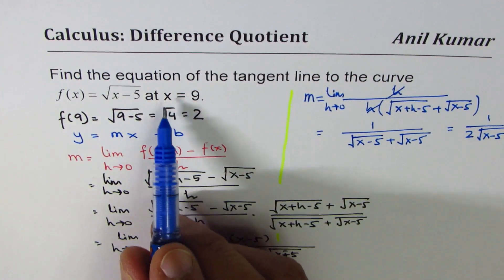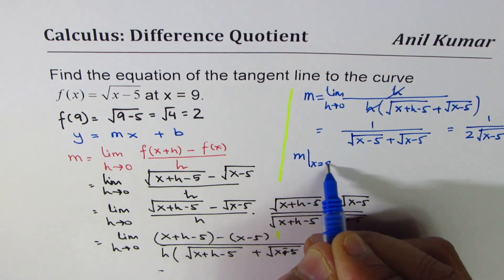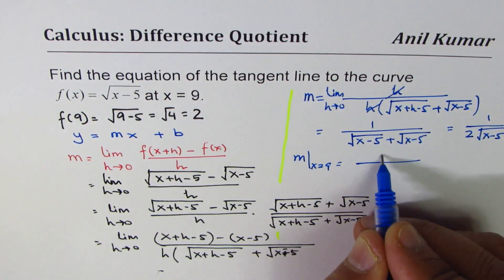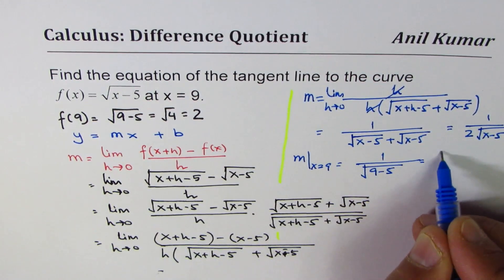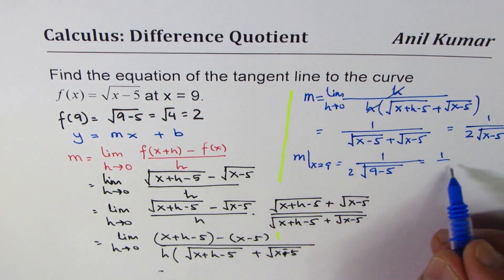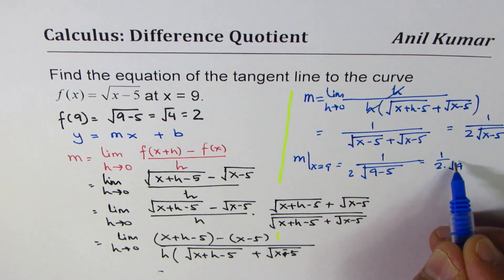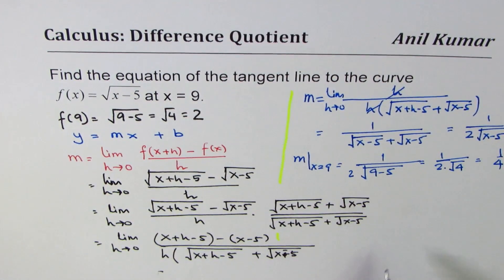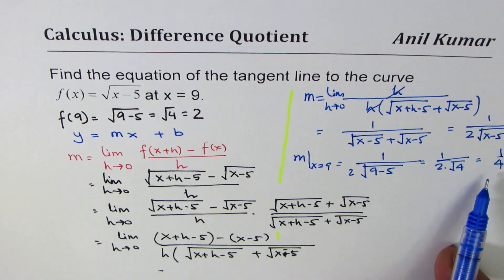Now, what is the slope at x equals 9? So the slope at x equals 9 is, let me substitute 9 here for x. So we get 1 over 2 times square root of 9 minus 5, which is 1 over 2 times 4 square root, which is 1 over 4. So the slope at x equals 9 is 1 over 4.